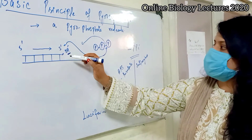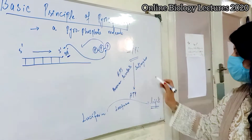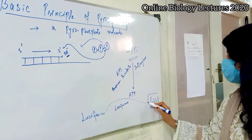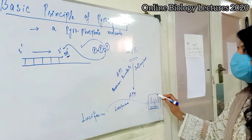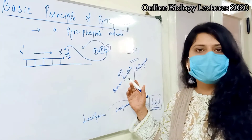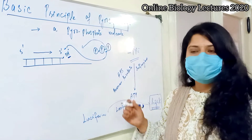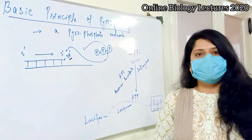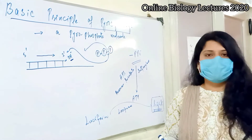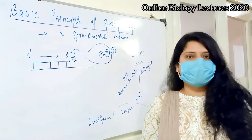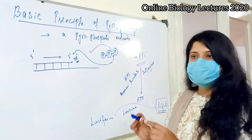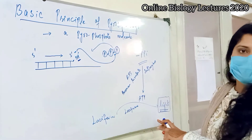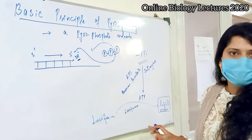So whenever a nucleotide is added, it results in the production of light. This is the basic principle behind pyrosequencing. We will now move towards the basic steps involved in pyrosequencing and how the process relates to this basic principle.